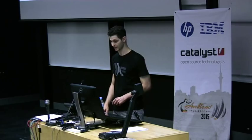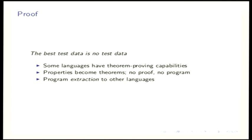A brief look at alternative approaches. Exhaustive testing says the best test data is all of the data — it generates all data up to a given size or depth and checks that the property holds in every case. It also supports existential properties, so instead of saying for all X this property holds, you can say there exists some X for which this property holds. Exhaustive testing is available in several languages. And finally, proof: the best test data is no test data. Some languages have theorem-proving capabilities where your properties become theorems, and if you don't provide a proof for those theorems you don't have a program — typically a compiler error. These support extraction to mainstream languages like OCaml, Haskell, Java, JavaScript, and C in the case of Idris.